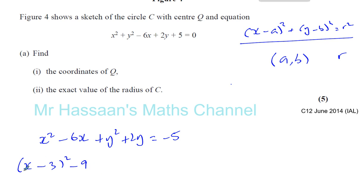Why do I do that? Because if I square this bracket, I'm going to get X squared minus 6X plus 9. I don't want the plus 9, I've just got to take it away.